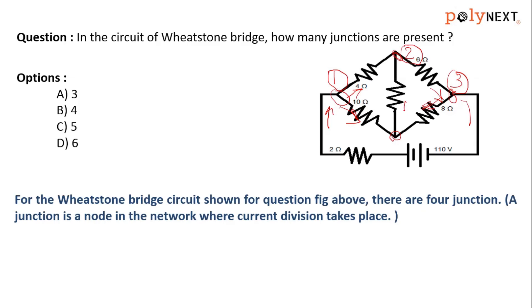Current can come this way, current is coming this way, and current may move this way. So therefore, this is the fourth junction.